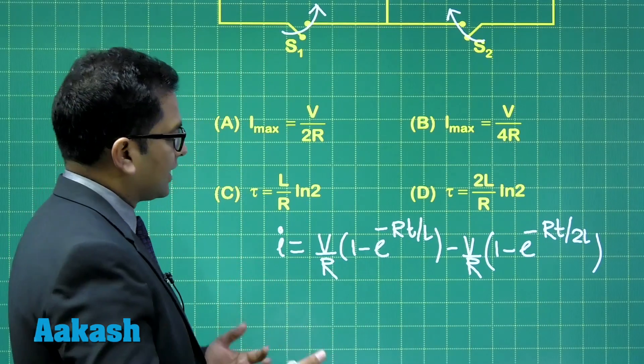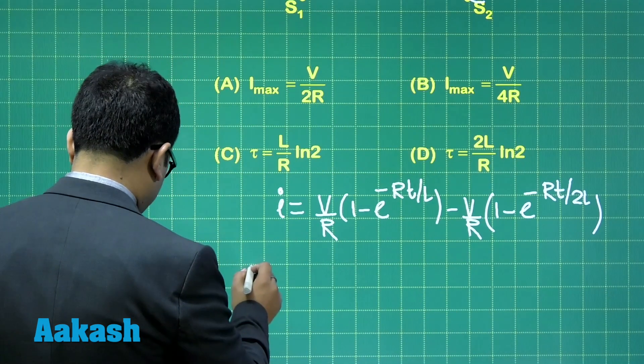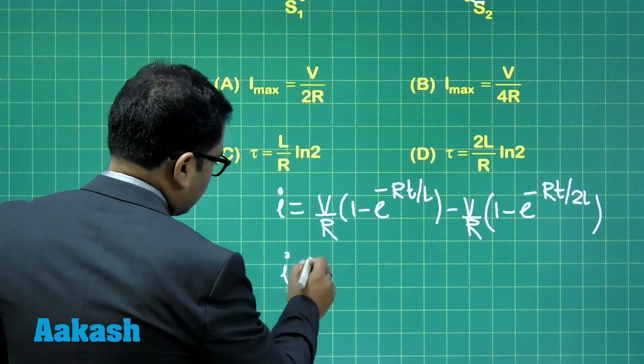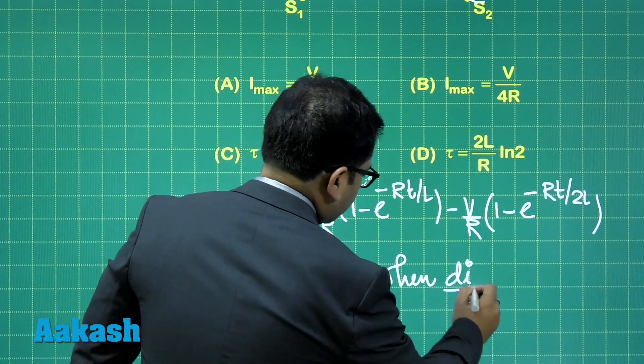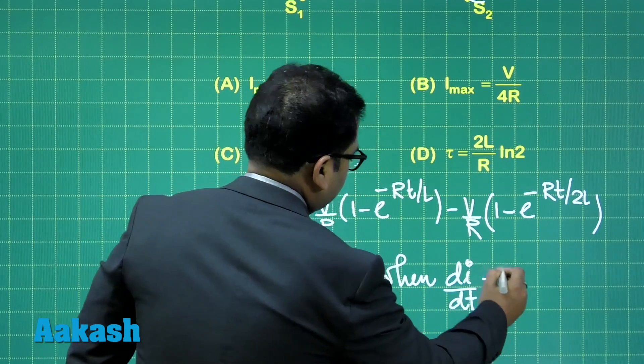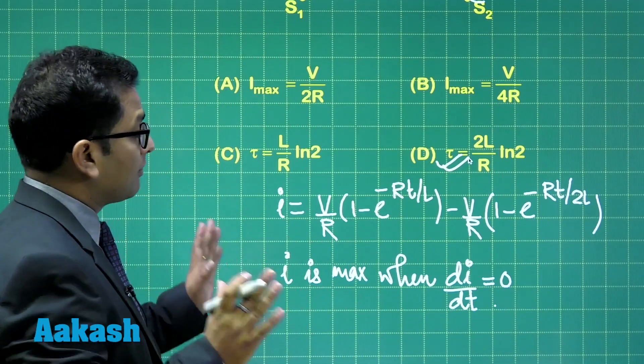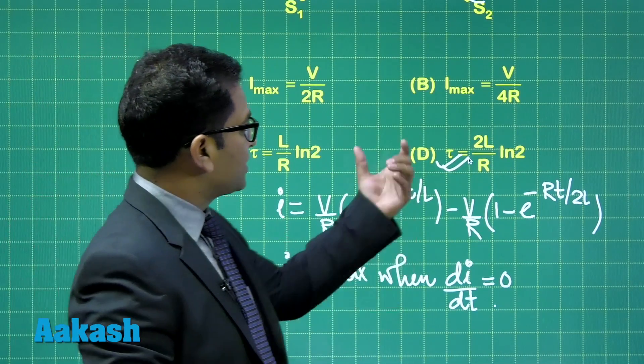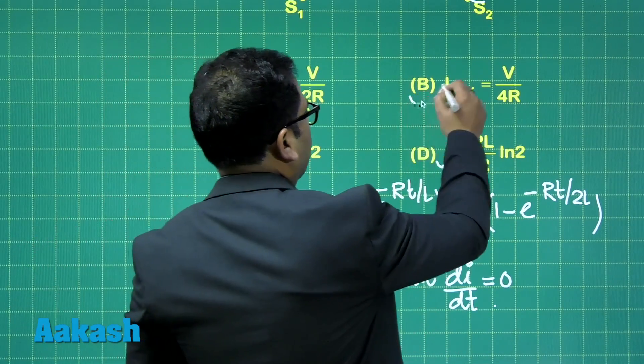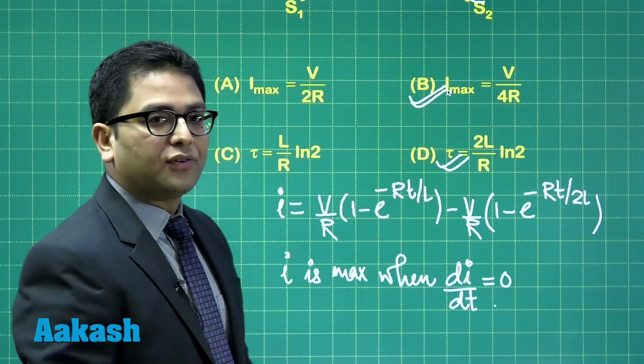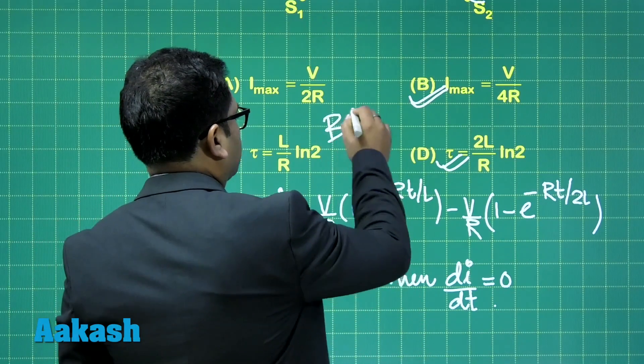You need to find the condition when the current would be maximum. I is maximum when di by dt equals zero. When you solve that, you get this particular time. A simple calculation doesn't require much effort. Once you get this time, put it here to get I max. You would be getting I max as V upon 4R. For question 4, the correct options are B and D.